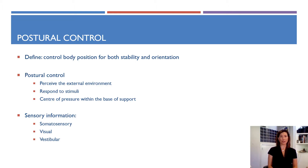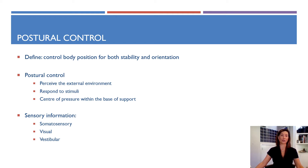Postural control is the control of body position for both stability and orientation. It is a complex interplay between sensory information to perceive the external environment, respond to stimuli, and maintain the centre of pressure within the base of support. Sensory information utilised to maintain control includes somatosensory information, which provides proprioceptive information via cutaneous, joint and muscle fibres; visual, which involves both peripheral and foveal; and vestibular, which informs the position and movement of the head with respect to gravity and inertial forces.